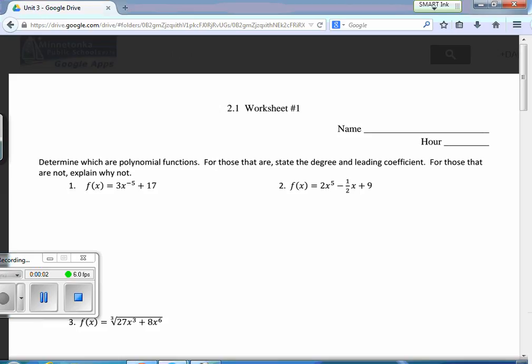Okay, today's lesson is 2.1.1, which is about polynomials. How do you tell if something's a polynomial? Well, basically, if it doesn't have a weird exponent on it.